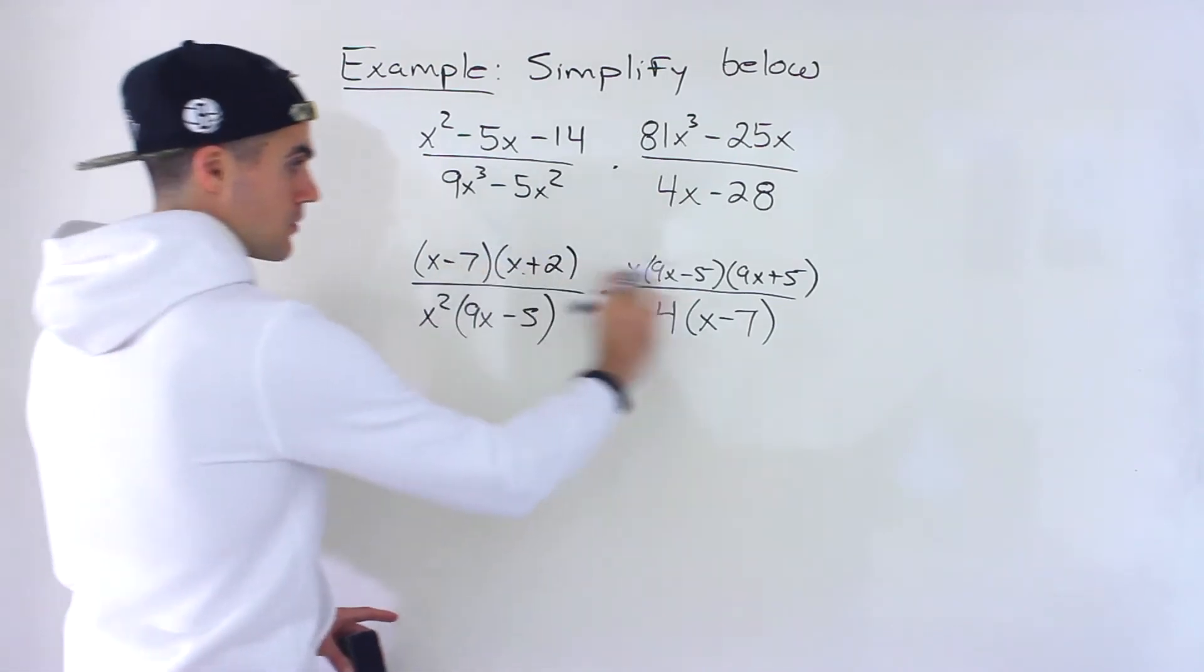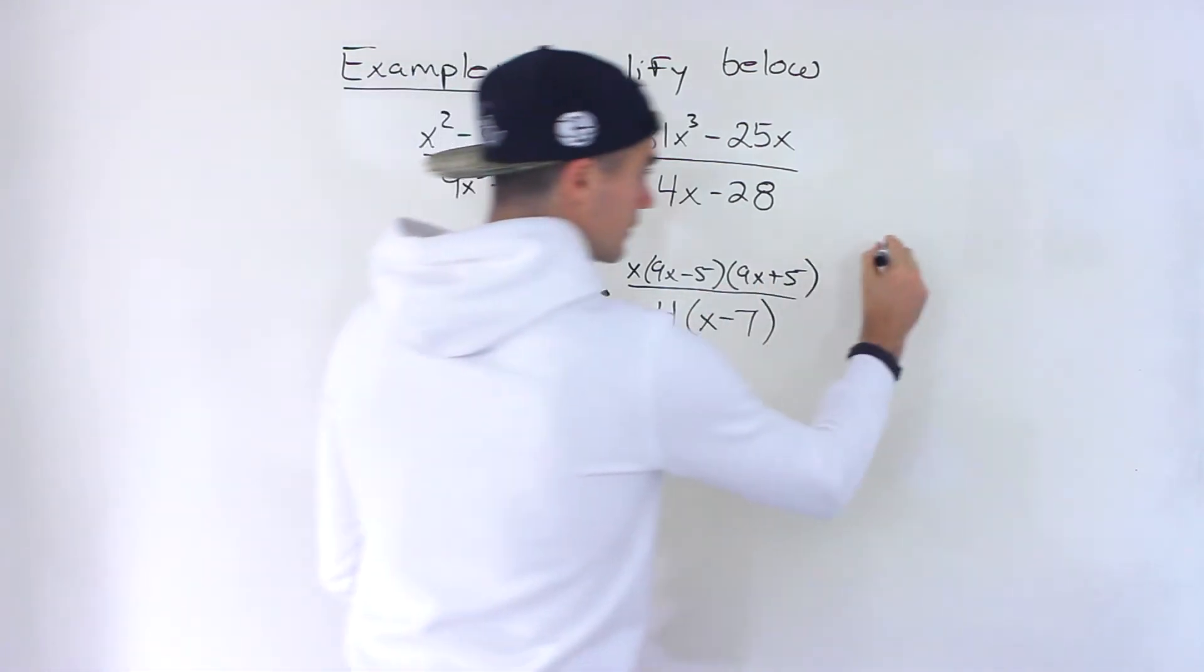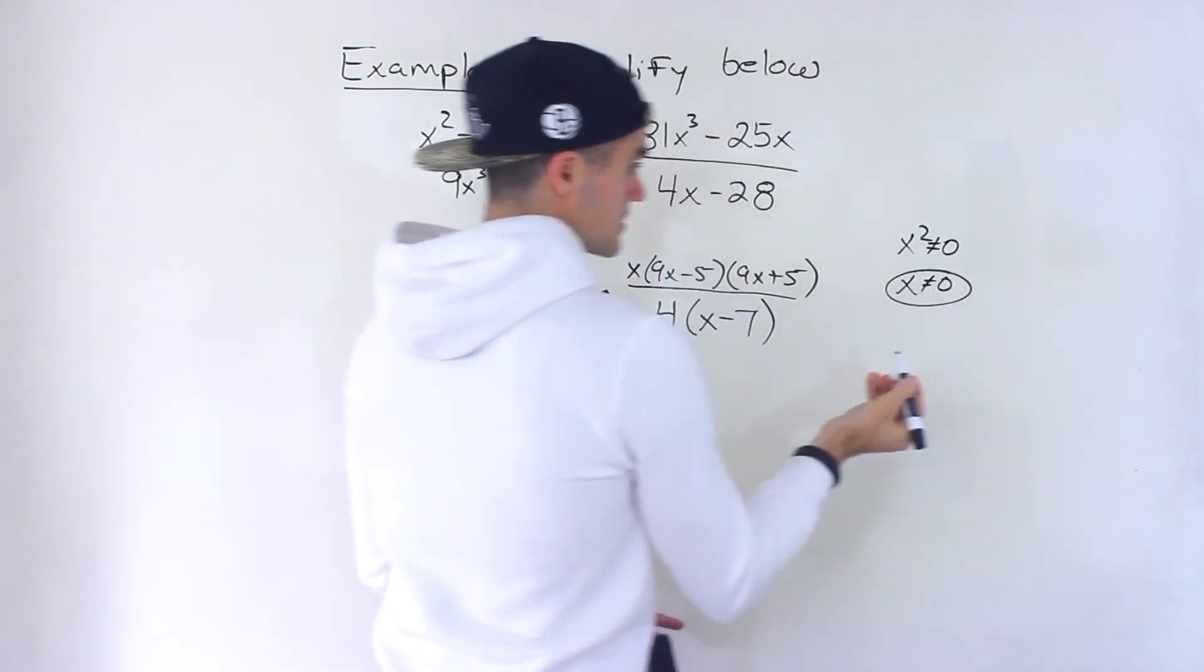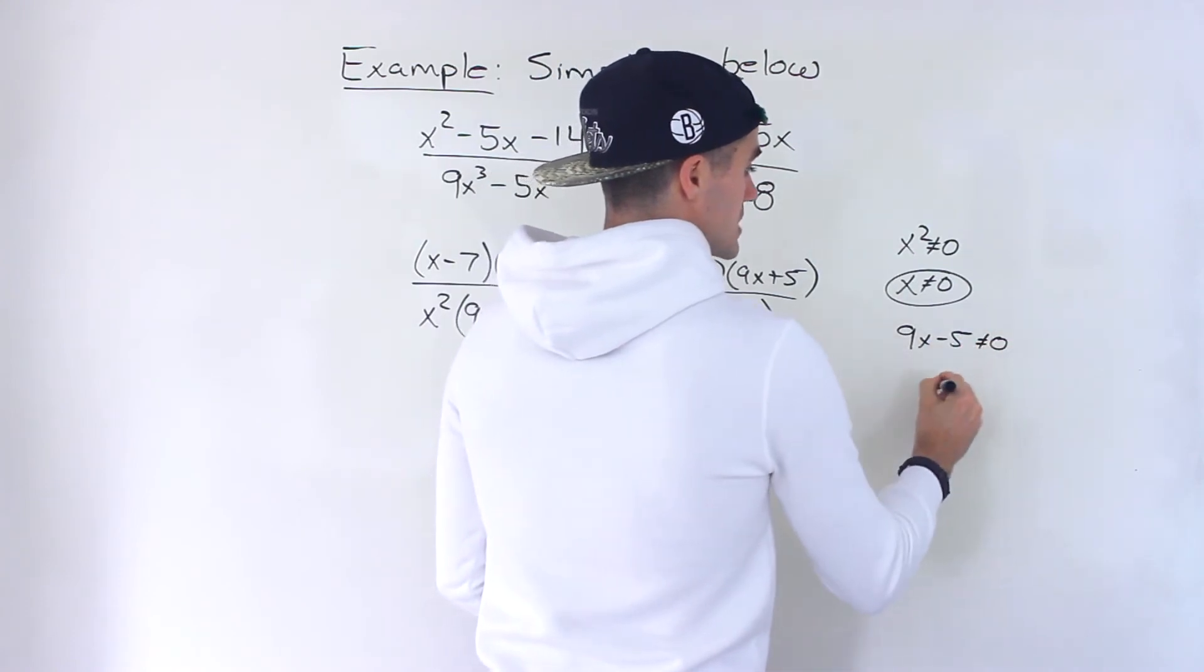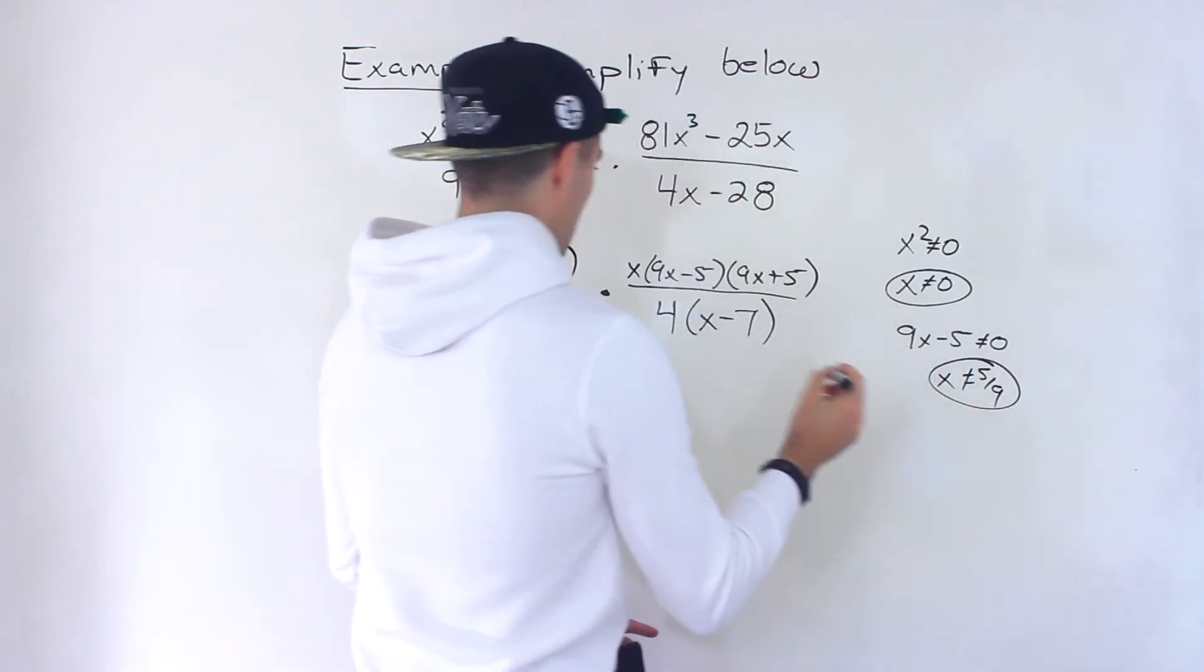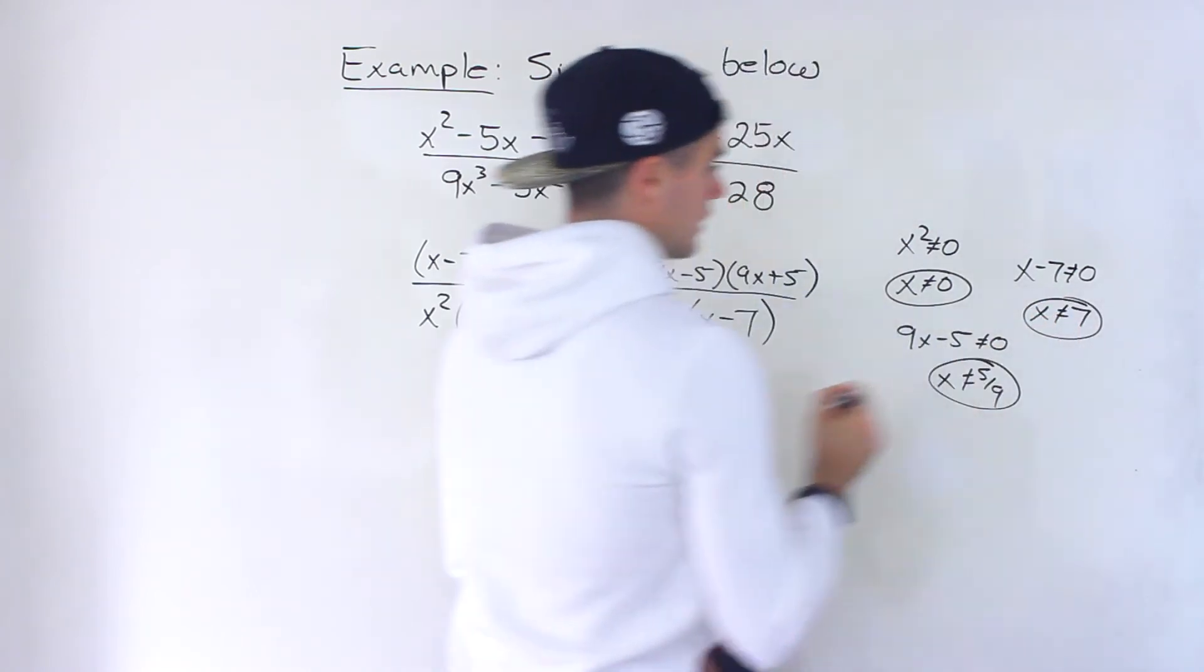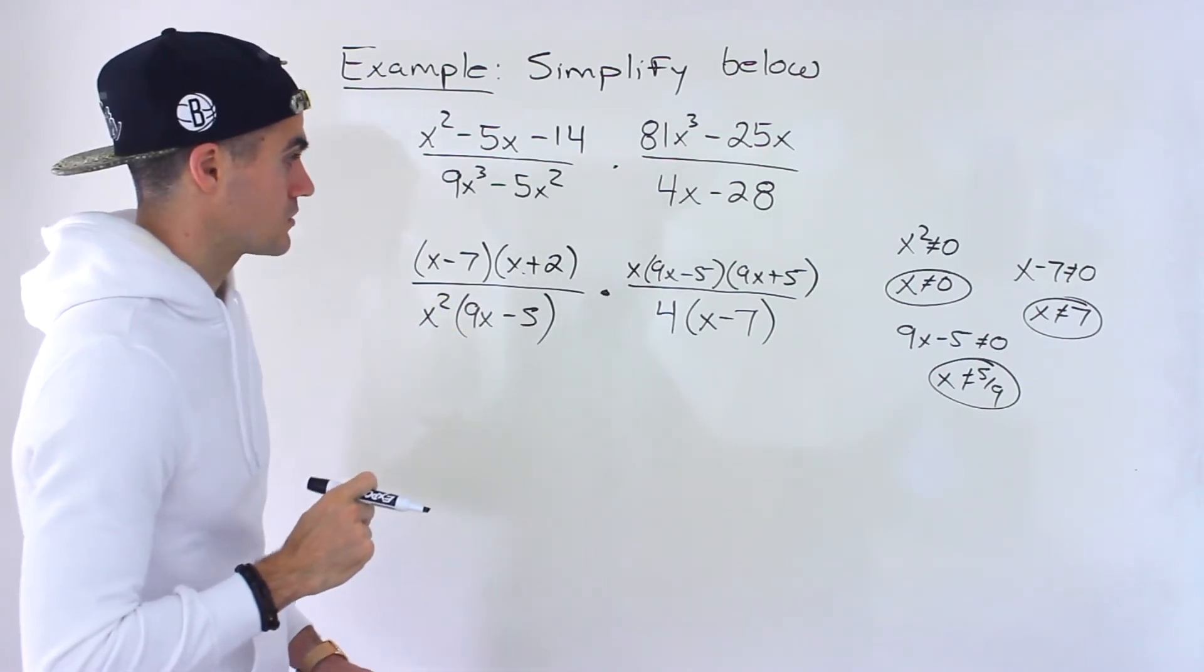So notice because we're multiplying, we'd only be looking at the denominator. So notice this x squared can't be 0, which means x can't be 0. So that's one of the restrictions. Notice 9x minus 5 can't be 0, which means x can't be 5 over 9. And then notice the x minus 7 can't be 0, which means x cannot equal 7. So those are the three restrictions right there circled.